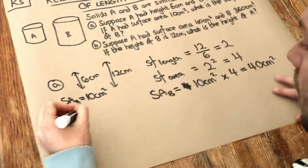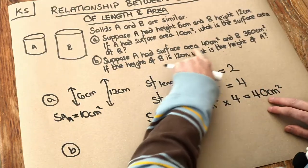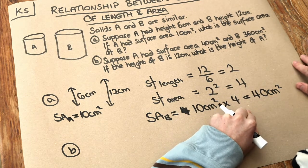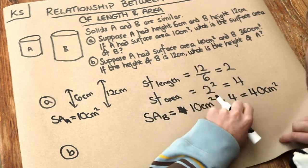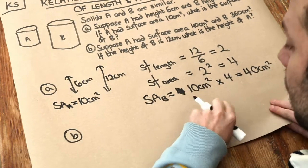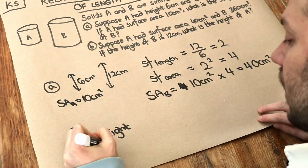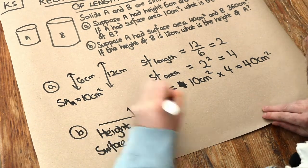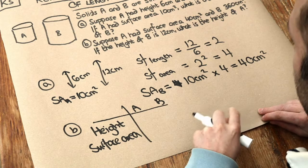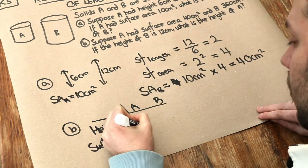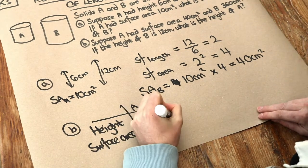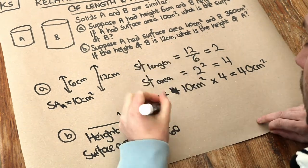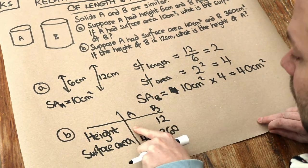What about part B? Suppose A had surface area 40 centimeters squared and B had 360 centimeters squared. If the height of B is 12 centimeters, what is the height of A? Well let's think about the height and the surface area of each — so we've got A and B. The surface areas are 40 and 360 for A and B respectively, and the height of B is 12 centimeters and we want to find the height of A.